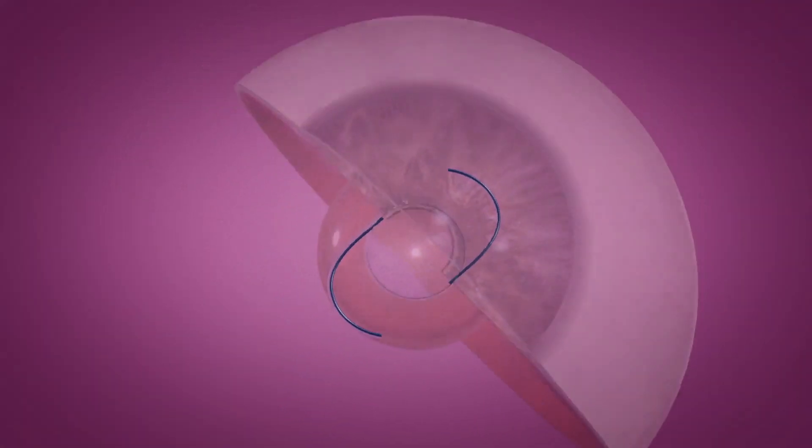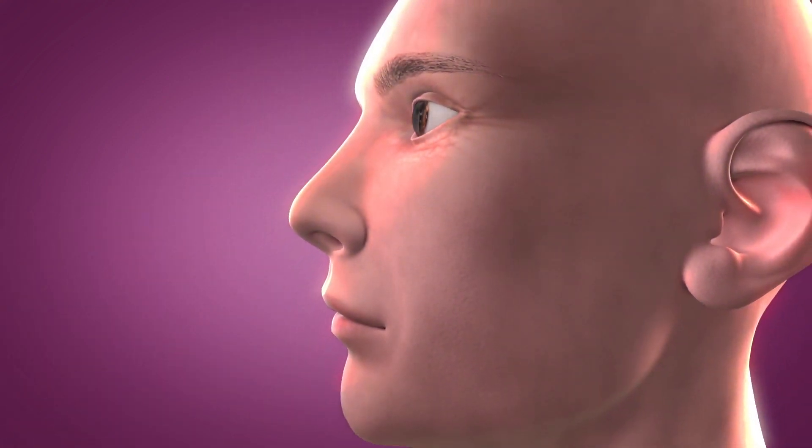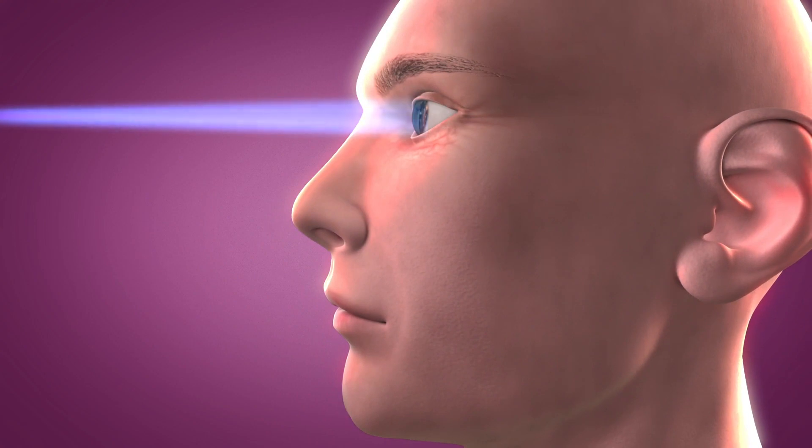RxCite's Light Adjustable Lens provides cataract surgeons with the ability to adjust the power of an intraocular lens after the lens has been implanted and the eye has healed, with an in-office, approximately 40-120 second light treatment.